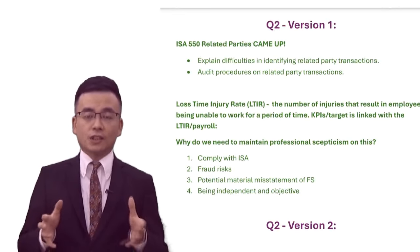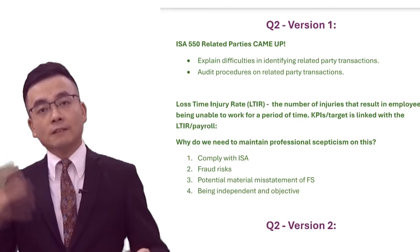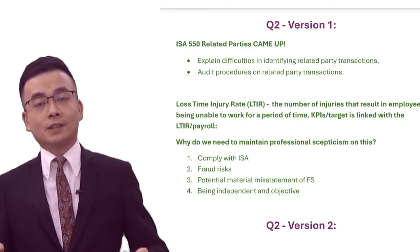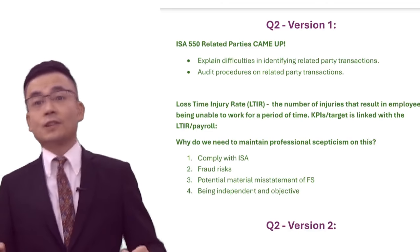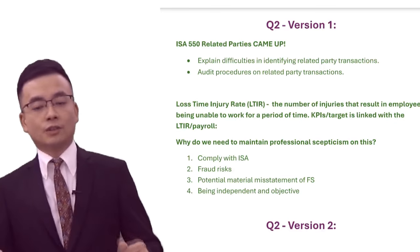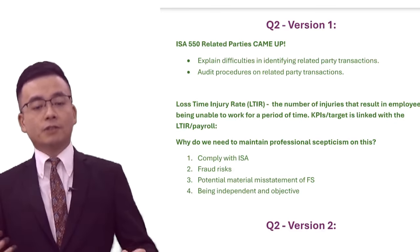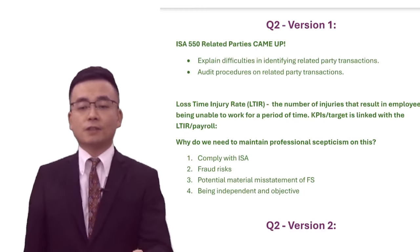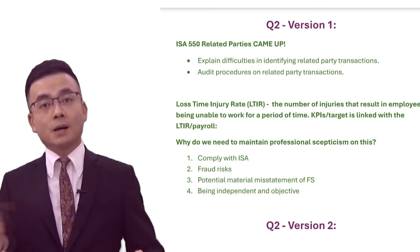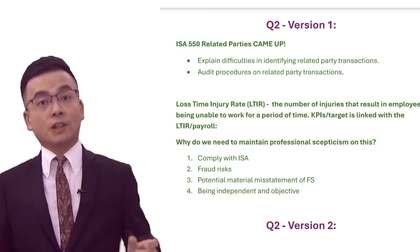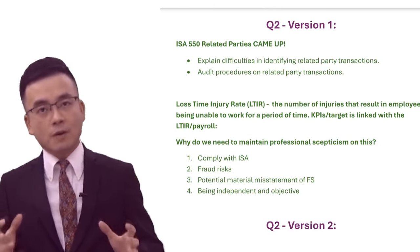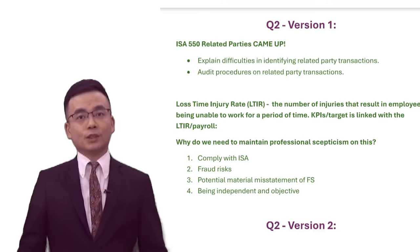In terms of question two in the AAA paper, version number one, ISA 550 related parties actually came up. In our mock exam, we have a very similar question on that. Part A of the requirement is to explain the difficulties in identifying these related party transactions, and part B covers all the audit procedures for related parties. This is very, very standardized — I'm sure you've done well.